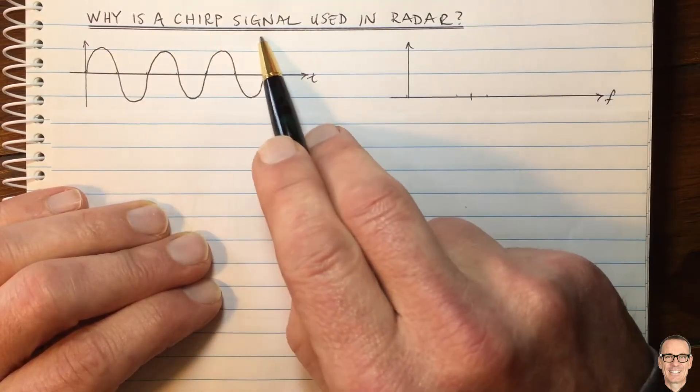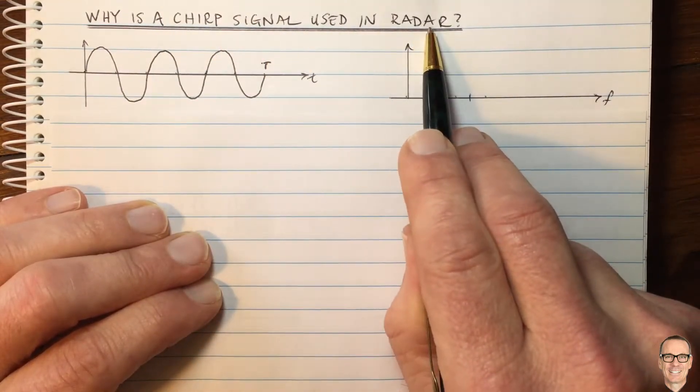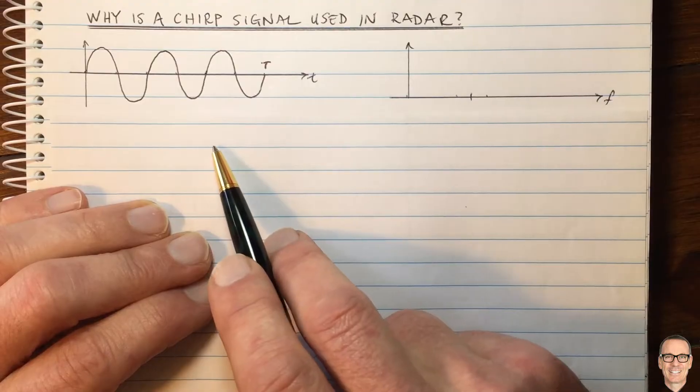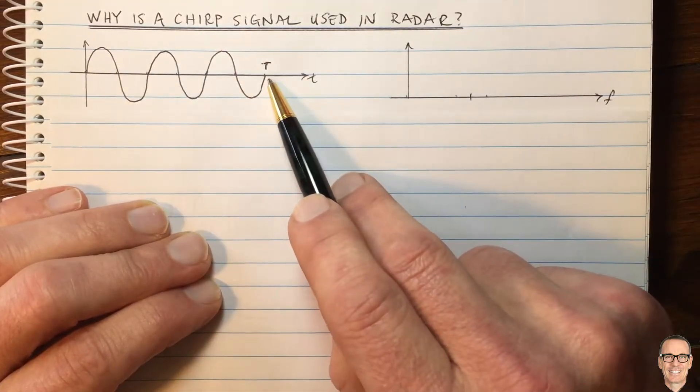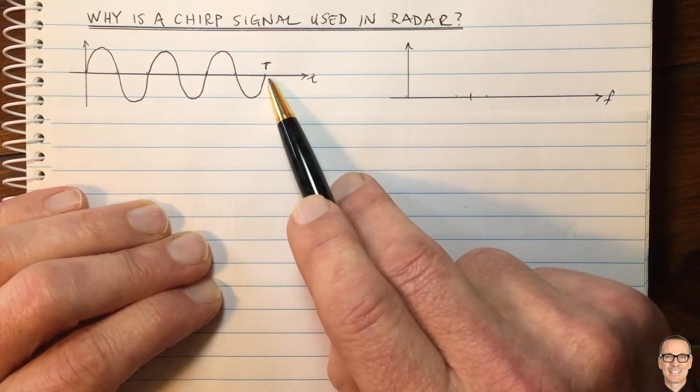Why is a chirp signal used in radar? Well, let's think about a basic pulse radar, which sends a signal for a finite amount of time and then waits for the bounce back.